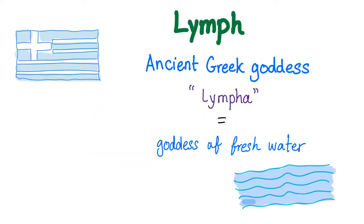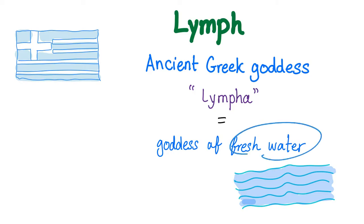Lymph — what does that mean? Lymph comes from the ancient Greek word lymph. It was a Greek goddess of fresh water. Gotta love history. So the moral of the story is: like fresh water, lymph is also colorless — most of the time.